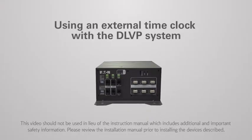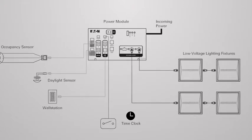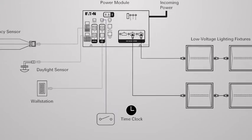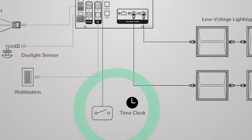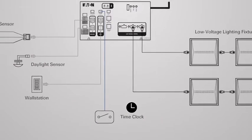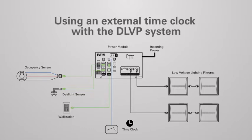This video is part of a series that explains how to connect and program components in a distributed low voltage power system. This video will demonstrate how to connect an external time clock contact to the distributed low voltage power system. The second half of the video will explain how the system responds to the time clock signal.